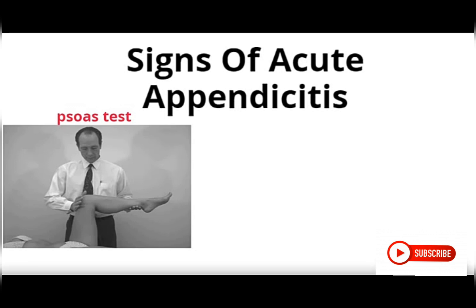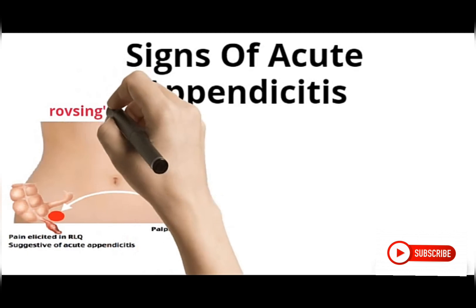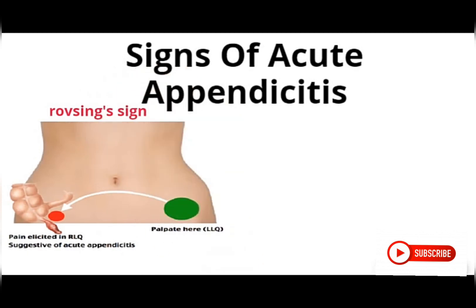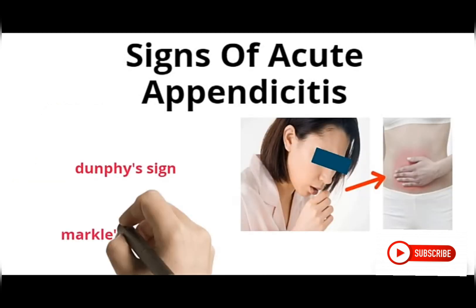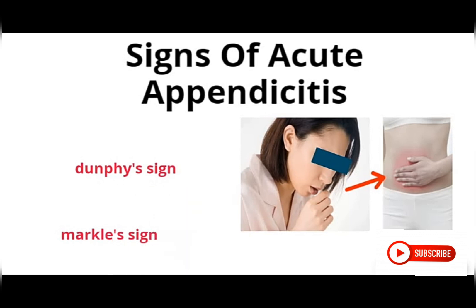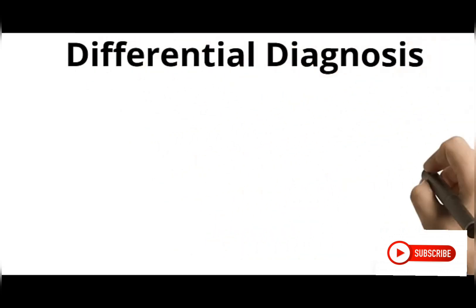You can also test for Rovsing's sign, where you palpate the left iliac fossa and pain is elicited at the right iliac fossa. We also have the Dunphy sign, the Markle sign, and others. In total there are about 10 different signs to test for in acute appendicitis.